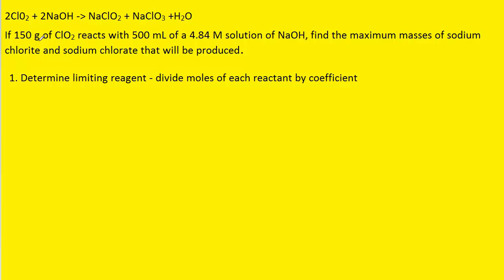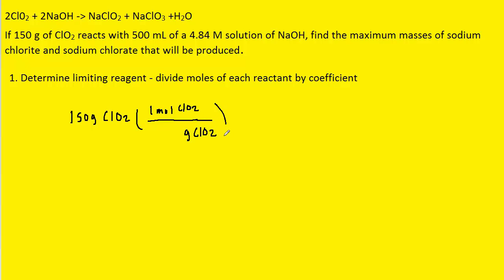Let's begin with the first reactant, where we have 150 grams of chlorine dioxide. We're going to convert that into moles. We know that one mole of chlorine dioxide would be its mass from the periodic table. So you want to pause the video, grab your periodic table, and add the masses of one chlorine and two oxygens together. When you do that, you should get about 67.5 grams.